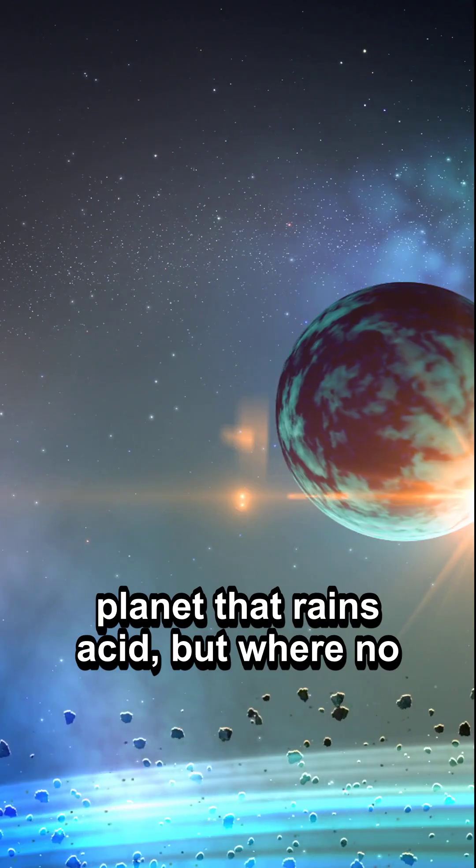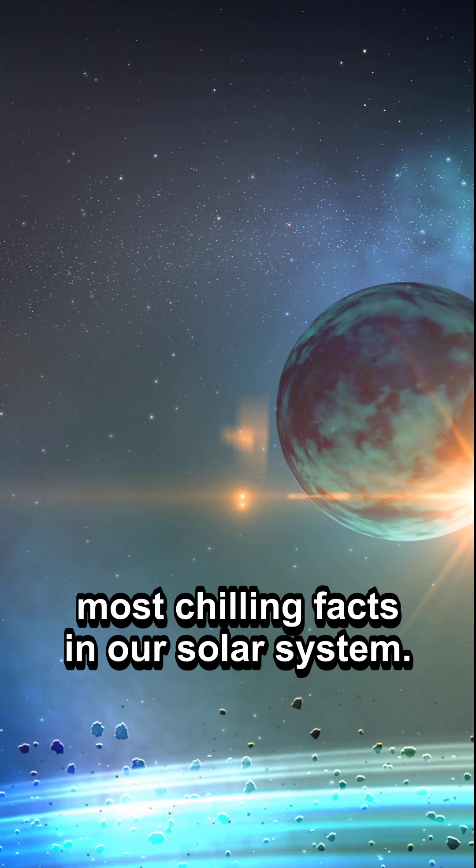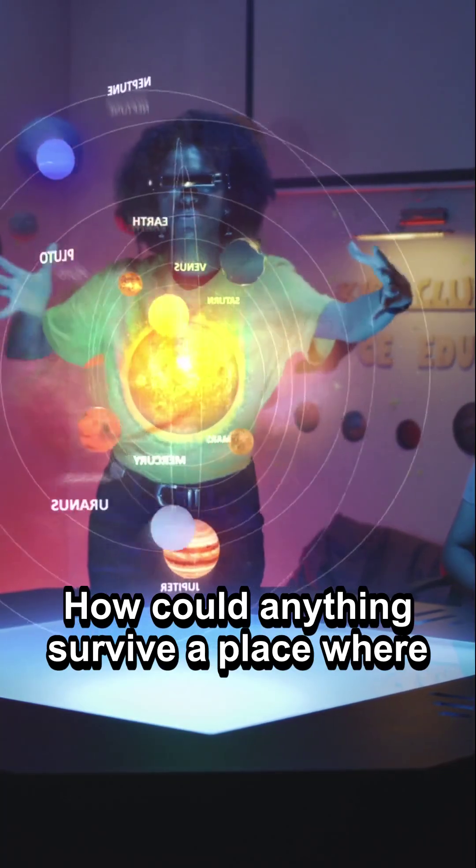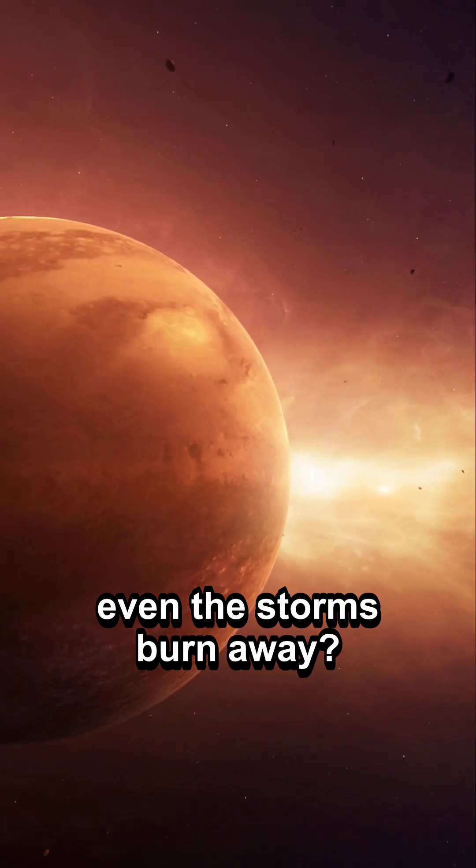A planet that rains acid, but where no raindrop survives. It's one of the most chilling facts in our solar system. How could anything survive? A place where even the storms burn away.